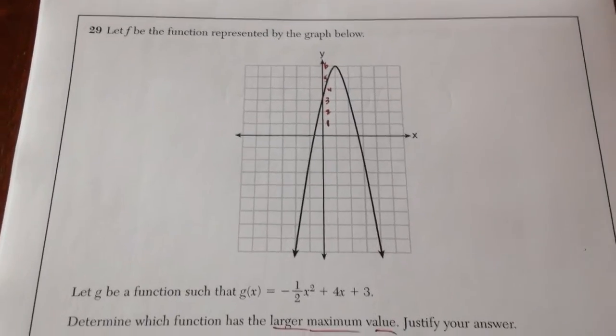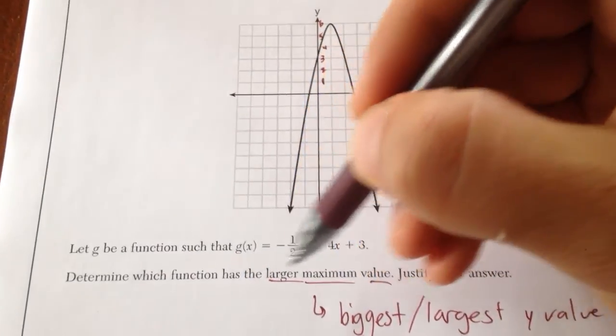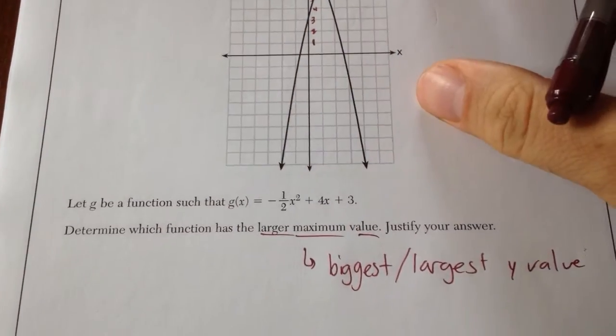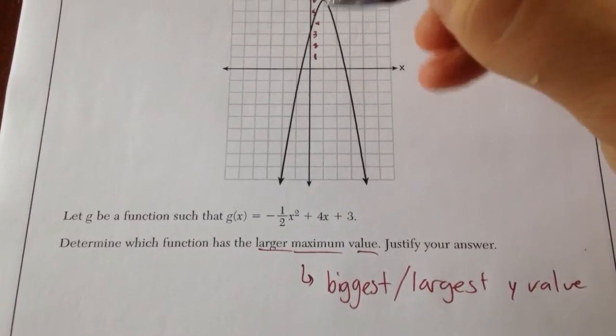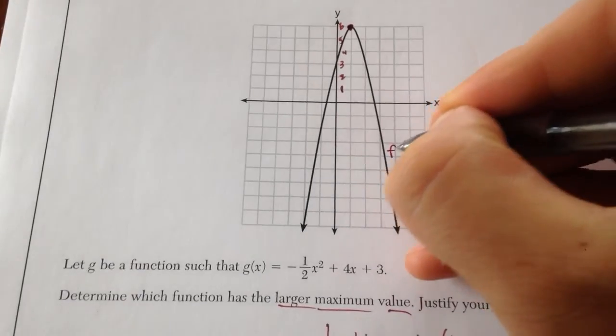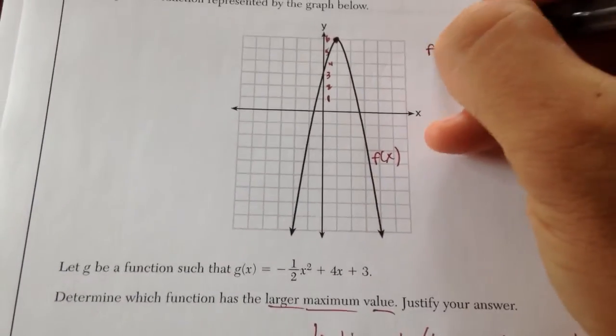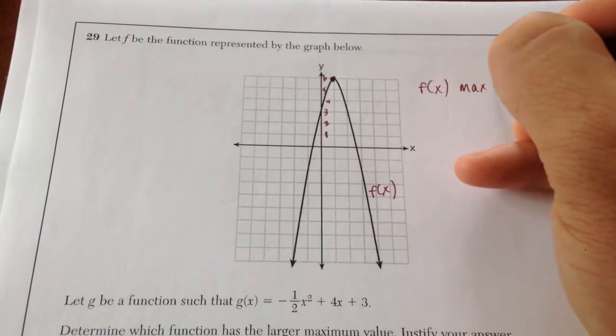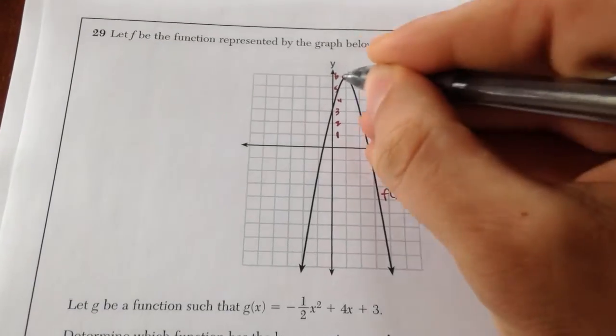Number 29 asks you to determine which function has the larger maximum value. We're going to justify your answer. So in this case it looks like the largest value of this f of x graph, f of x's maximum value is 6.